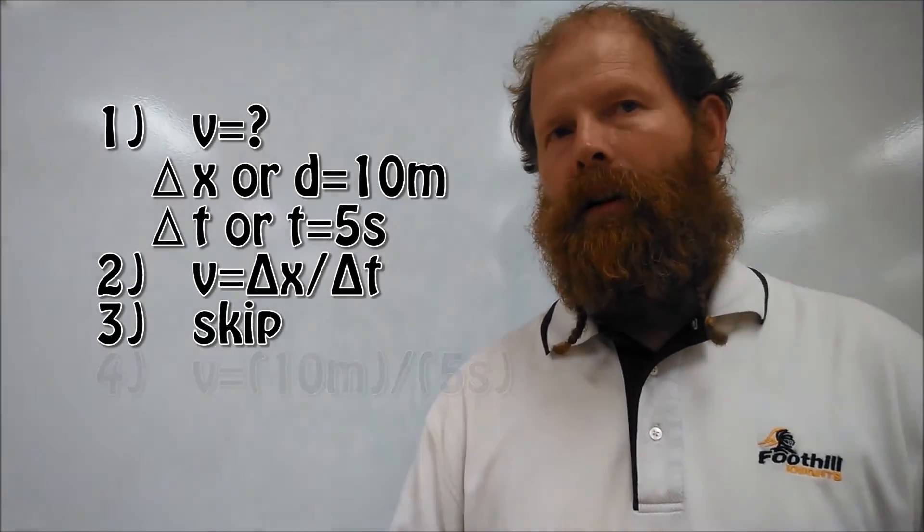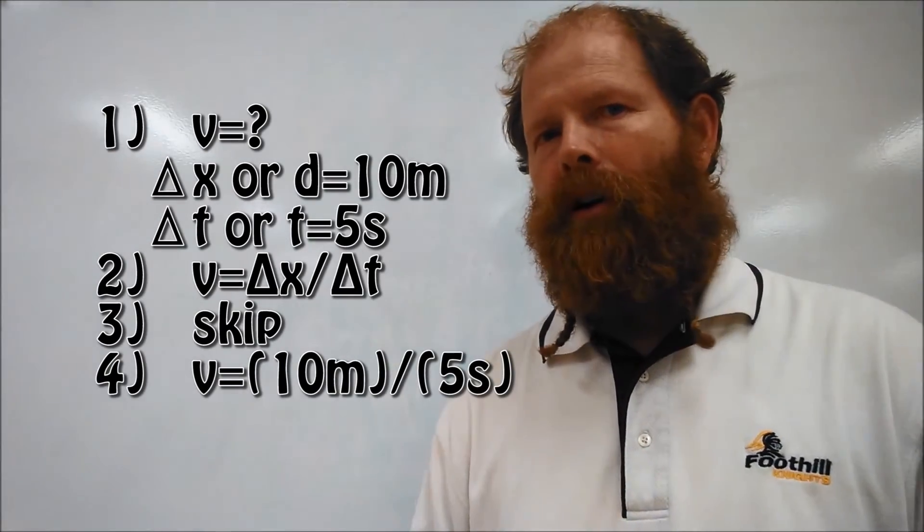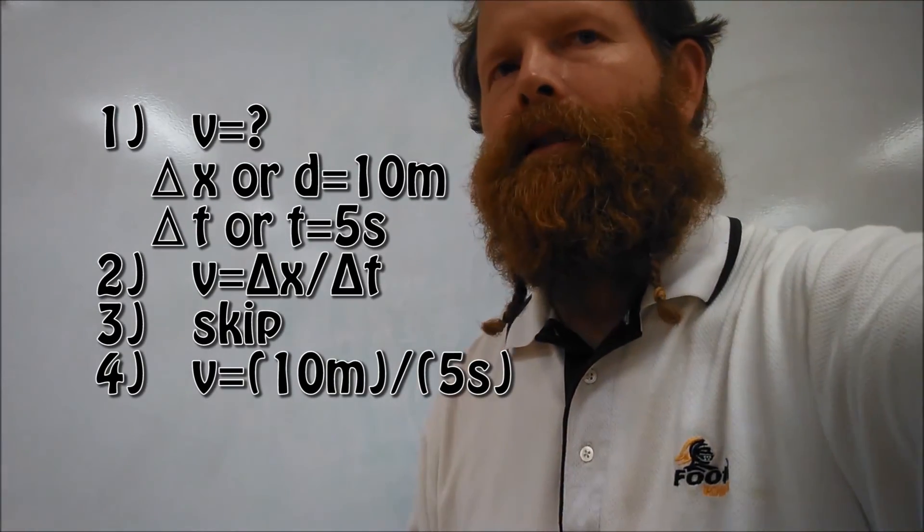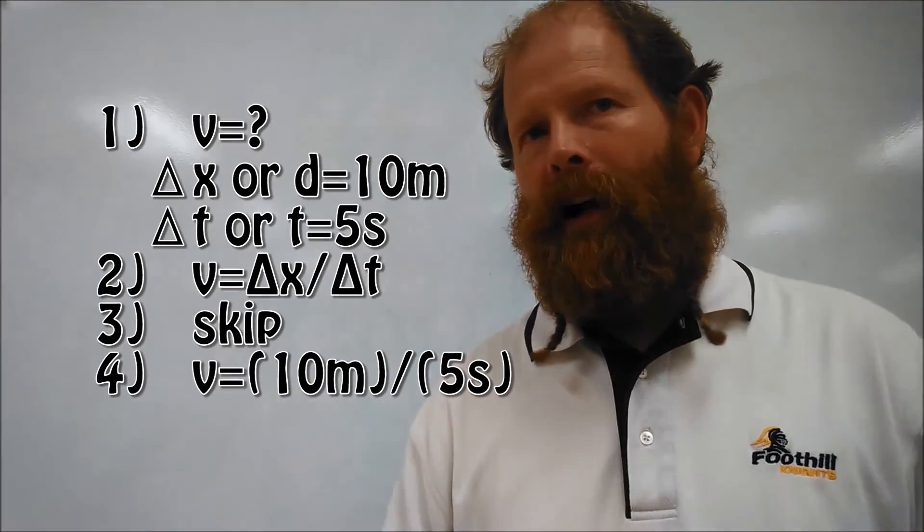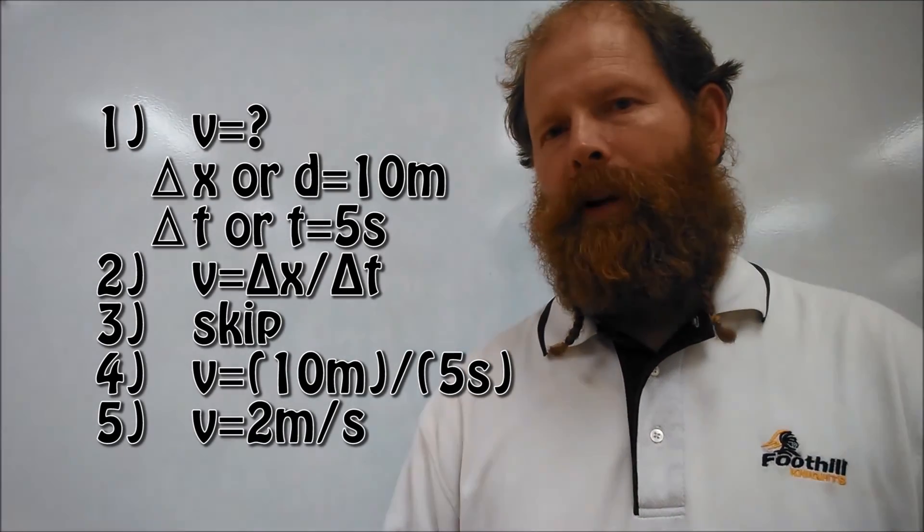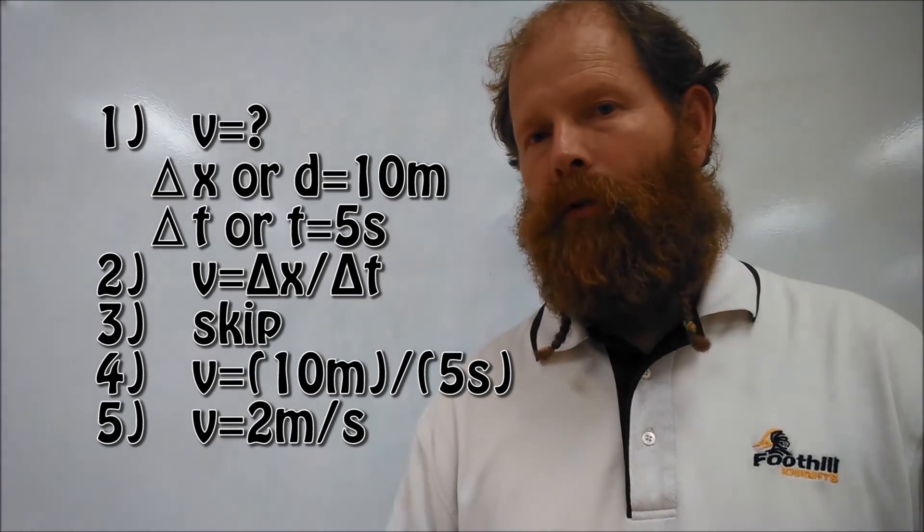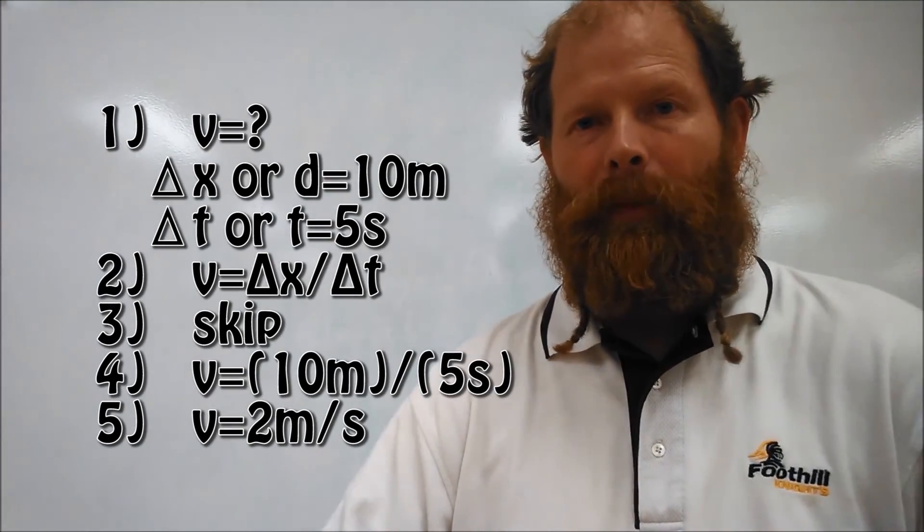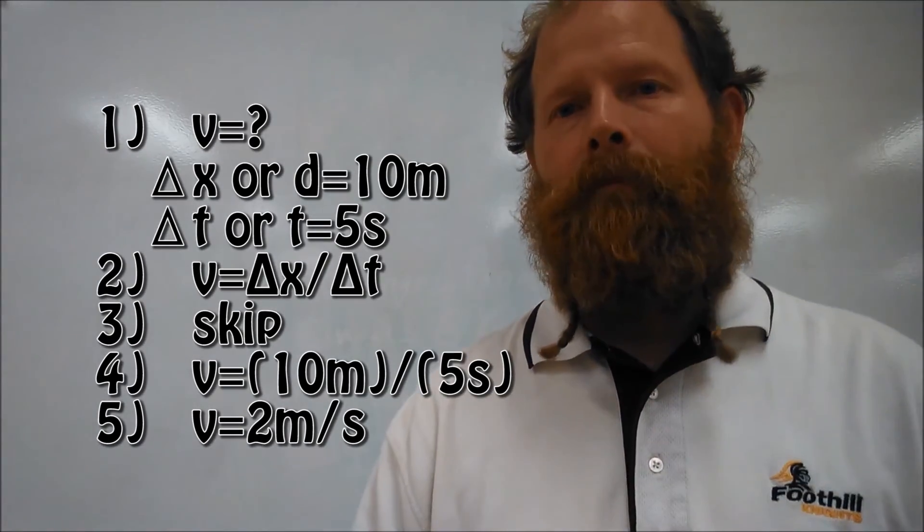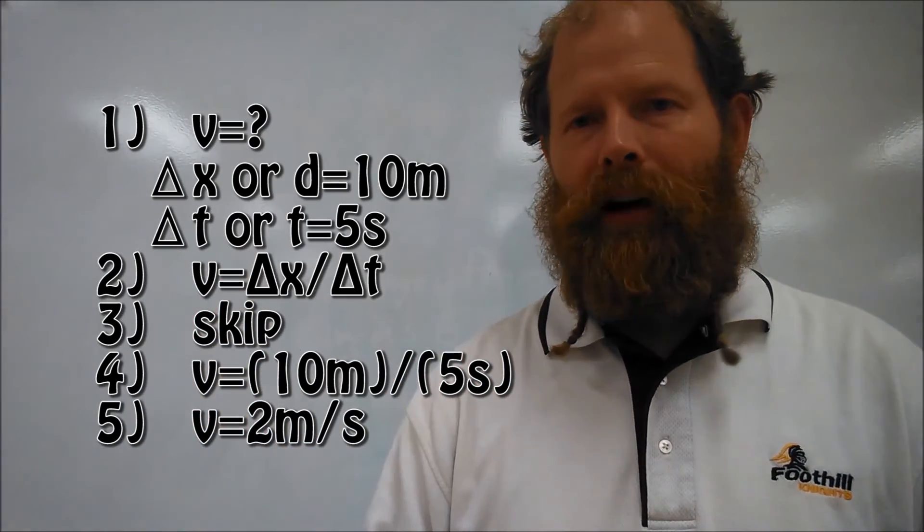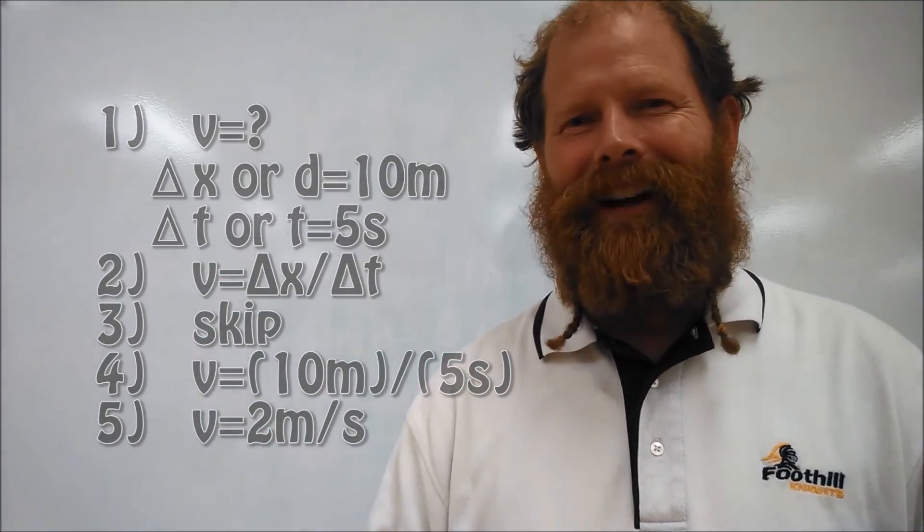Then we plug in V equals 10M over 5S. And 10 divided by 5 gives us 2. And so we calculate for step 5, 2. And then we just leave the units M over S, which is actually how that would be left. It's meters per second. But for right now, don't worry about what it means. It's just M over S. We'll get to what it means soon enough.